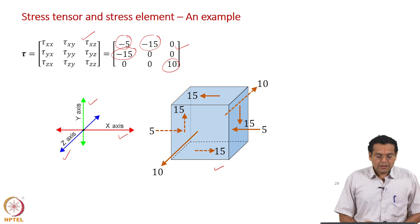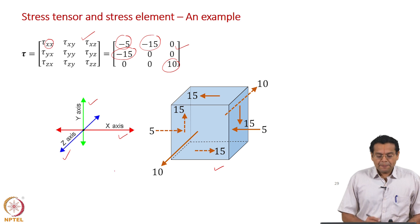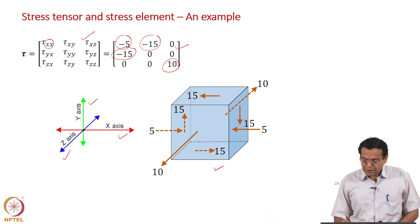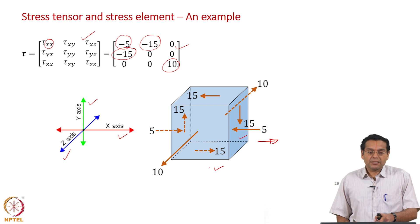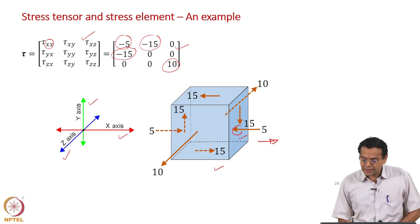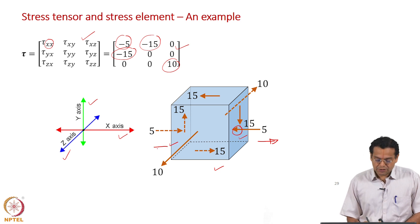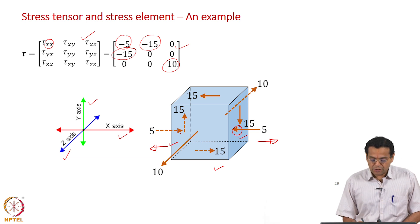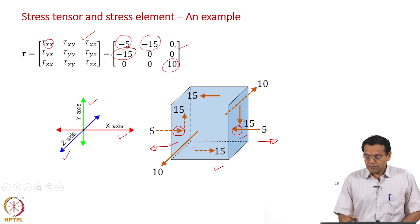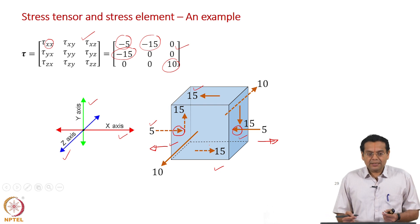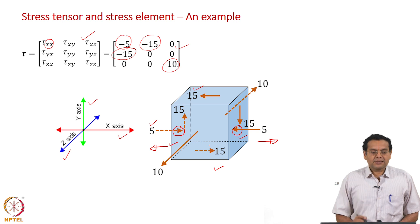Let us look at the −5 value, which is τxx — the x-component of the stress vector acting on the x-plane. For the right-hand side face, the normal is along the positive x-axis. Because the tensor component is negative, the direction of the force should be along the negative x-axis. For the left-hand side face, the normal is along the negative x-axis, so the direction of force should be along the positive x-axis. On the stress element, we show only the absolute magnitude; the direction of the arrow tells us the sign of the component.